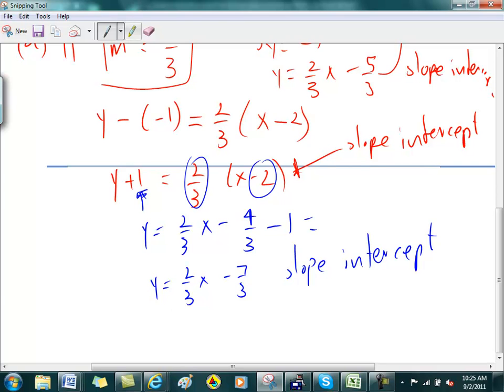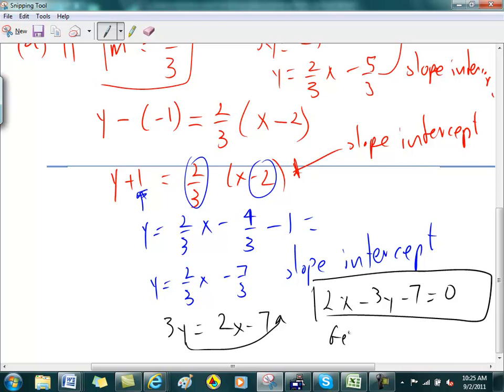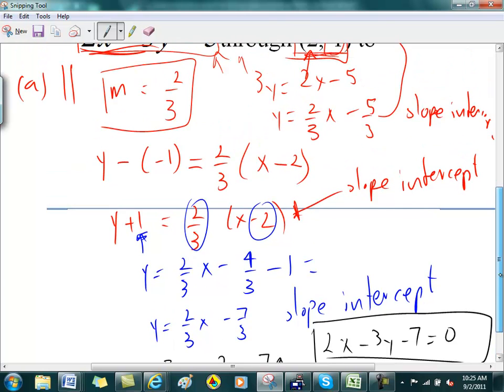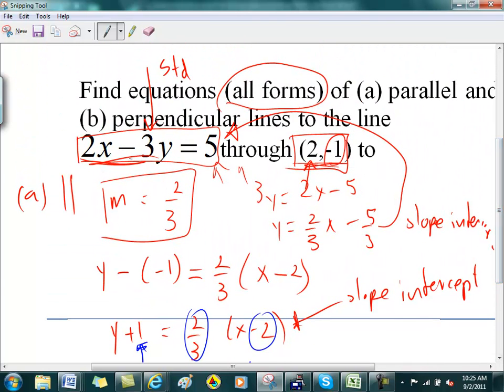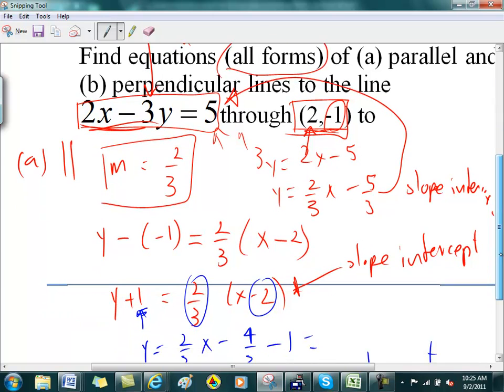So I need to go back and massage this stuff so that I don't have fractions anymore. I'm going to do that by multiplying by 3. So I get 3y is equal to 2x minus 7. This is still not in general form because, remember, in general form, I need everything on one side and a 0 on the other side. So I'm going to move this over here so that my equation becomes 2x minus 3y minus 7 is equal to 0.